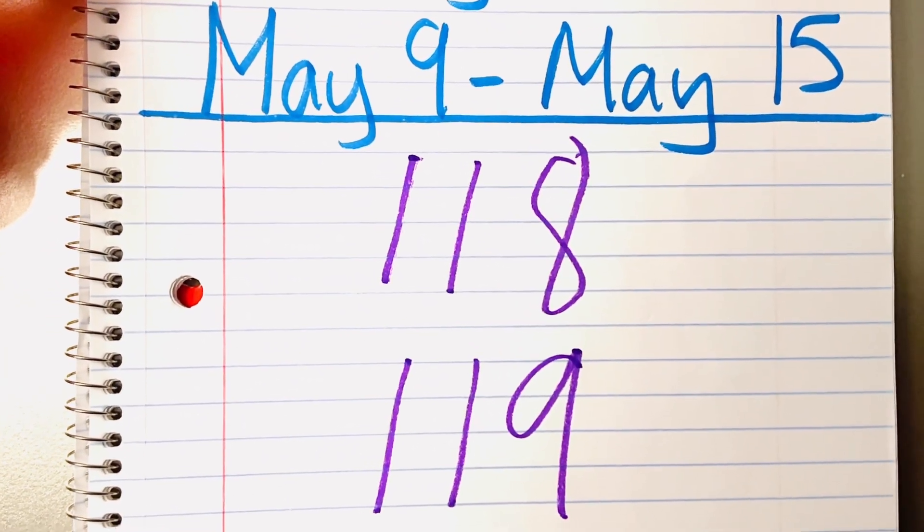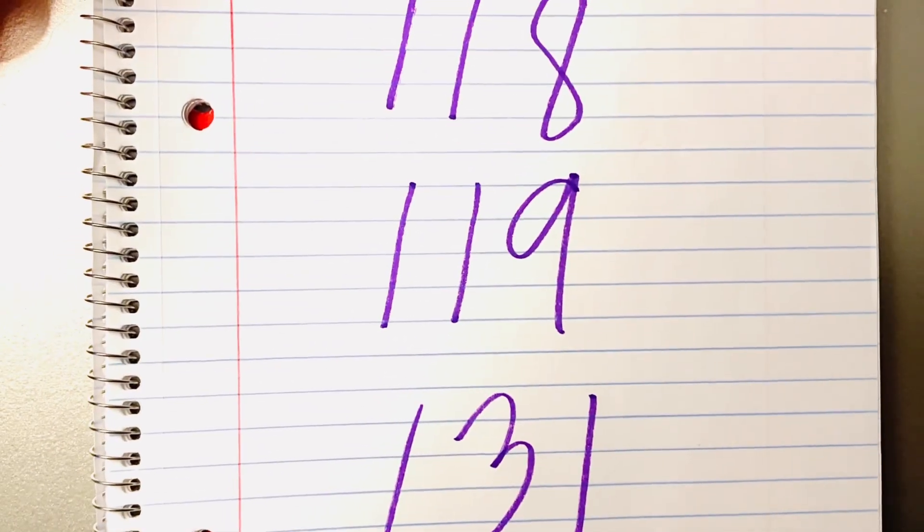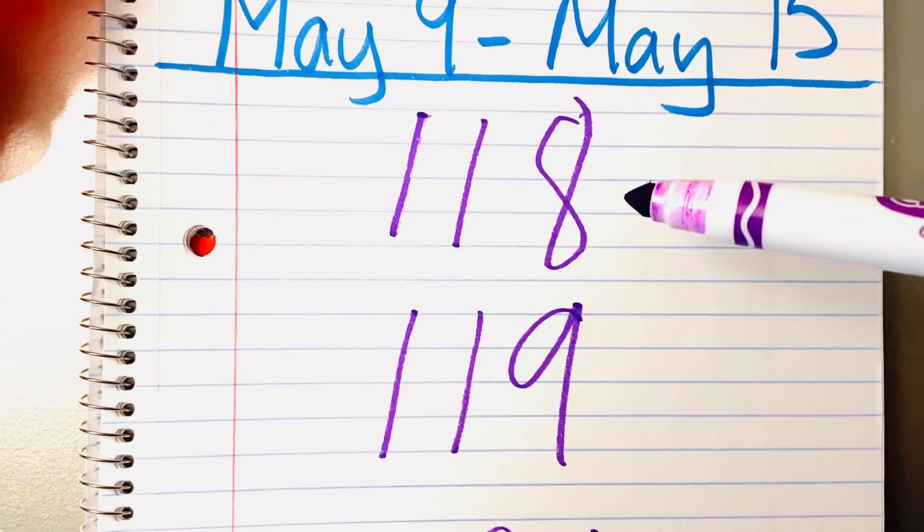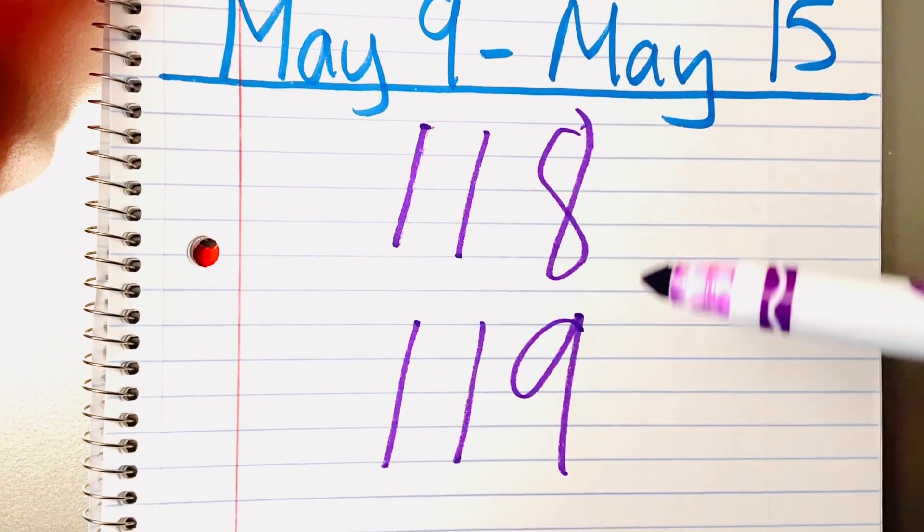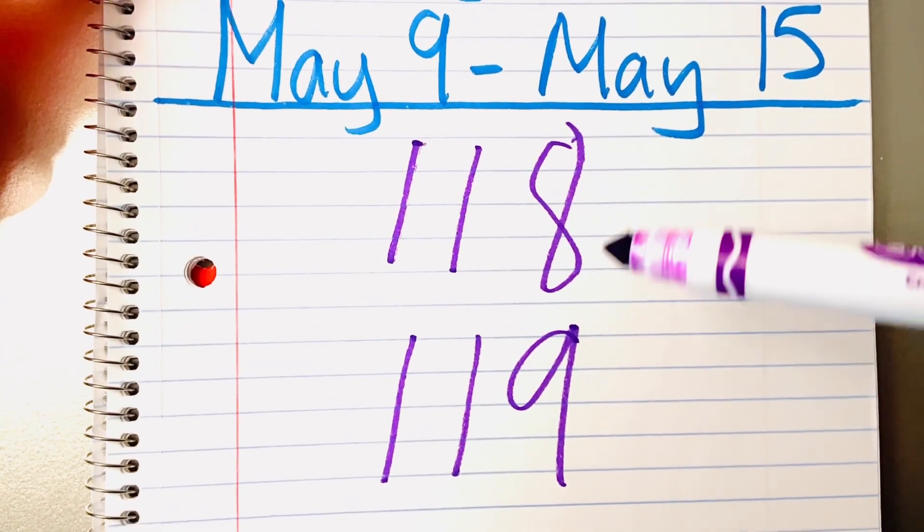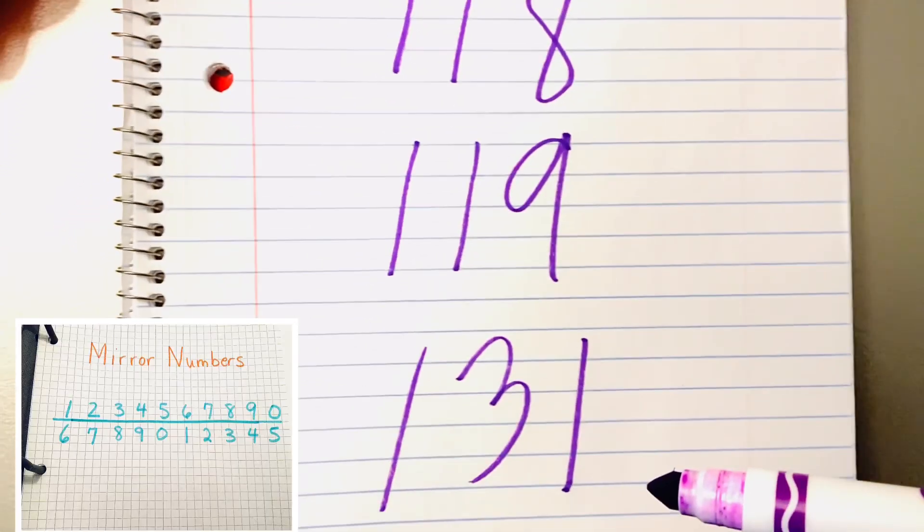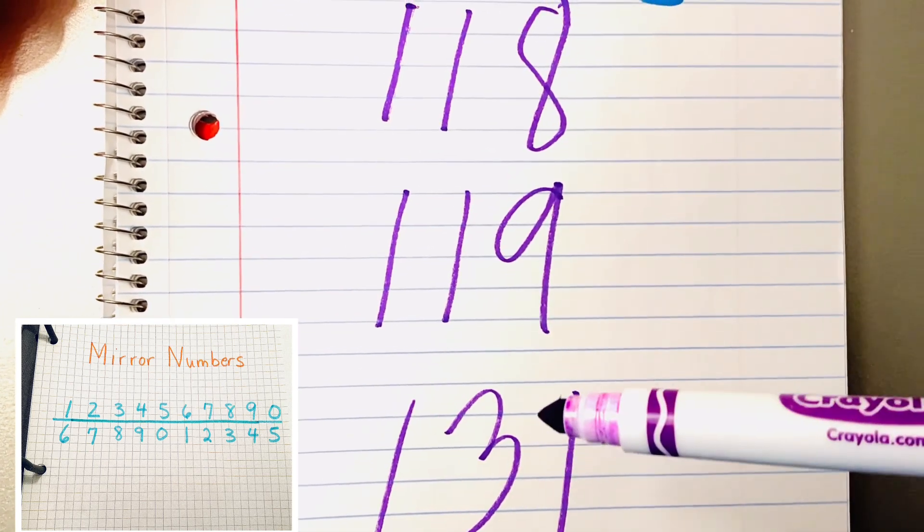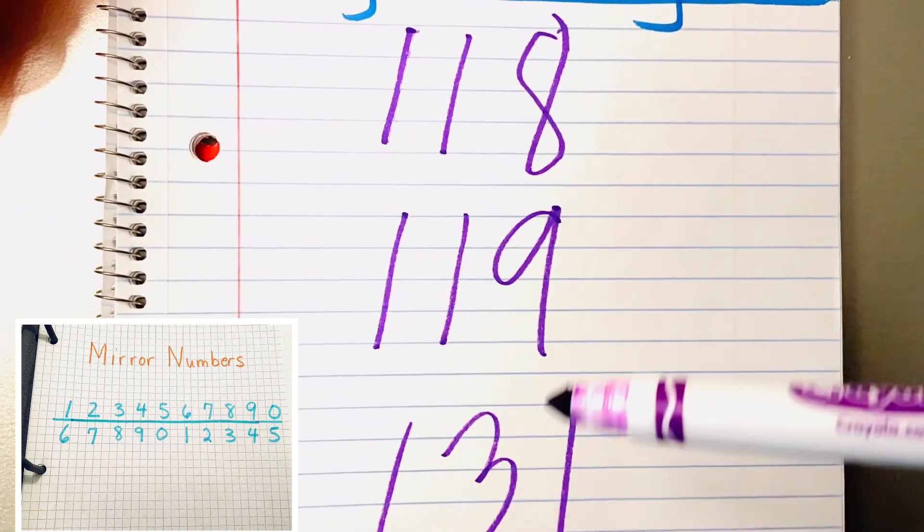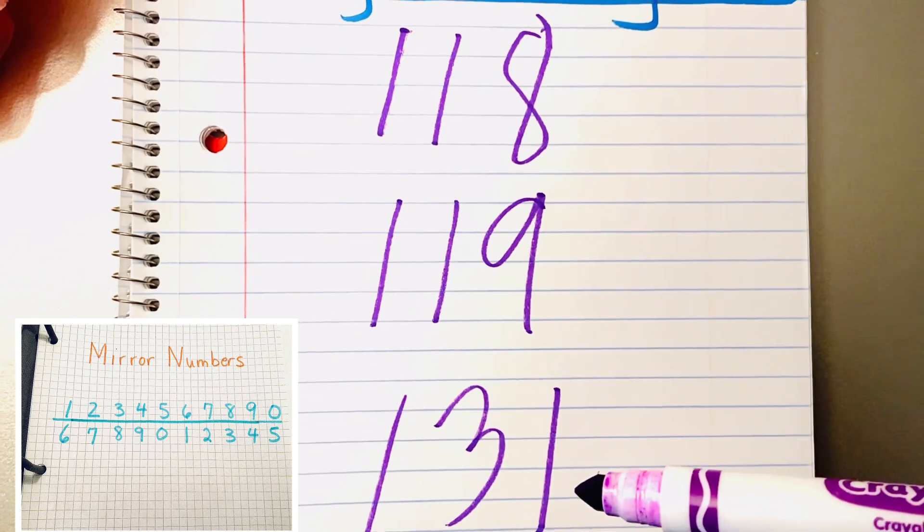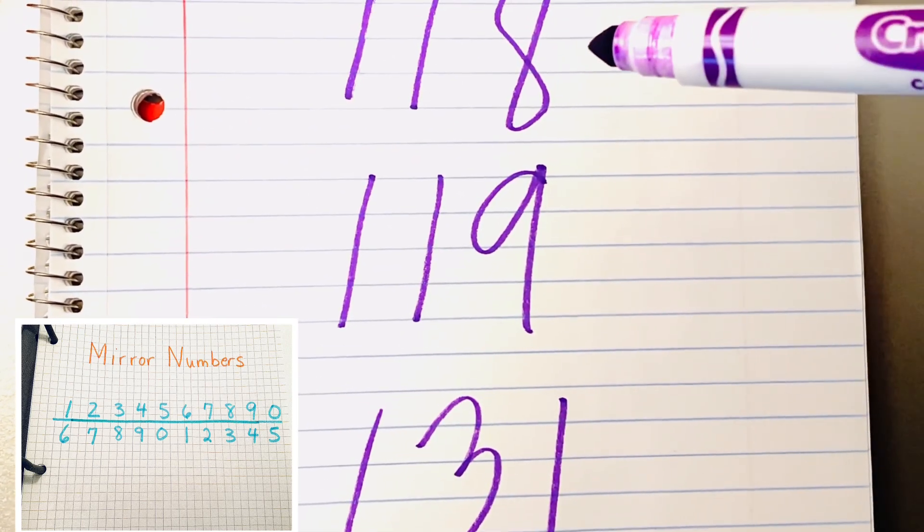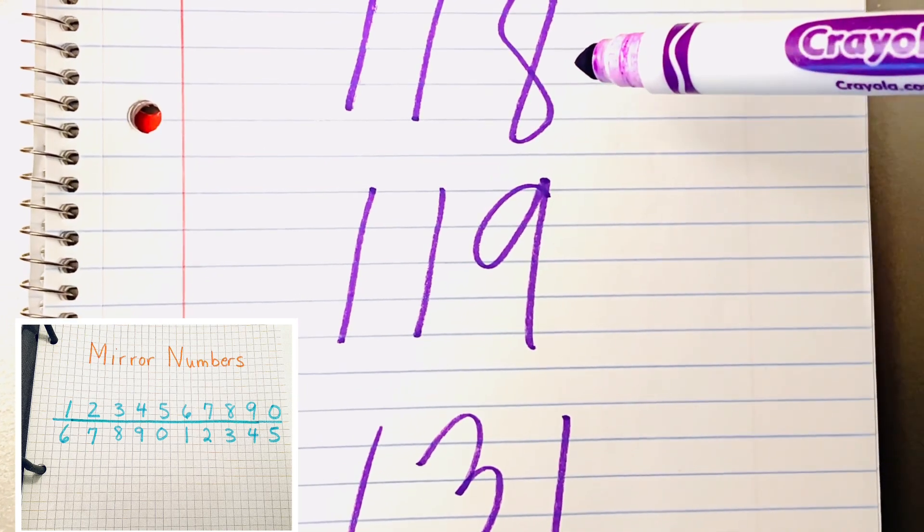As you can see, the 118 is one off from the 119. So if you play 118, you probably should play the 119 just in case the number falls one off. So if you like the 131 number on this page, we have another mirror situation. 3s equal 8s and 8 equal 3s. So if you play 131, you should also play 118.